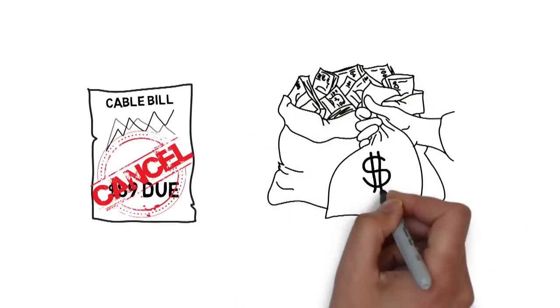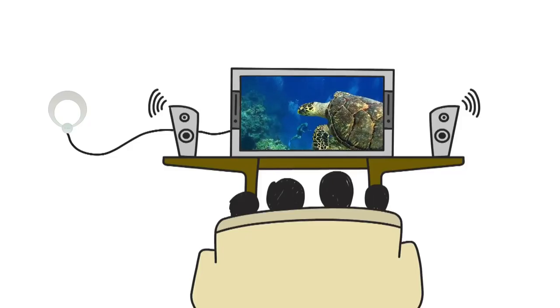The Eclipse costs less than the price of one month of basic cable. Just think, you can save over $1,000 per year for more important things, like a new TV for your Eclipse antenna.